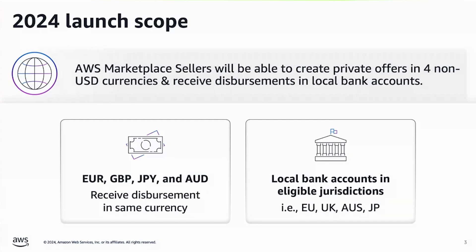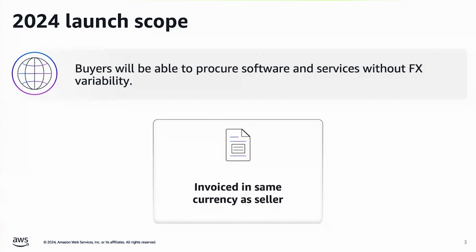Next, sellers will be able to receive disbursements in local bank accounts in eligible jurisdictions like the EU, UK, Australia, and Japan. And finally, buyers will be able to procure software and services from AWS Marketplace without the current foreign exchange variability risk, since they can now be invoiced in the same currency as the seller.